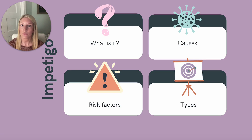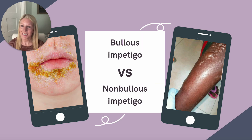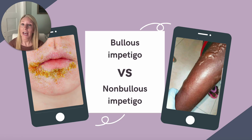Other risk factors include poverty, overcrowding, and even poor hygiene. There are actually two types of impetigo: bullous and non-bullous impetigo. An extra exam tip here — I would be sure to know how to recognize a picture and description of both bullous and non-bullous impetigo.